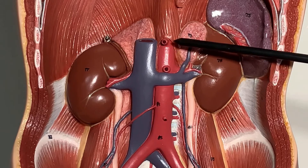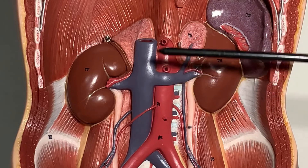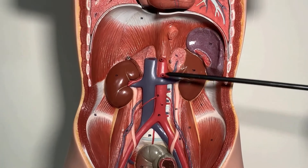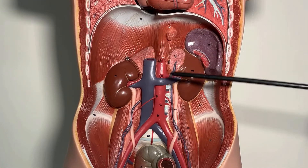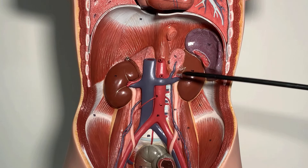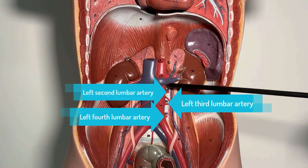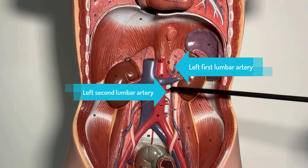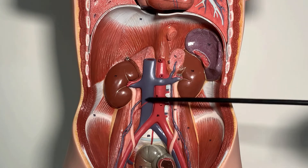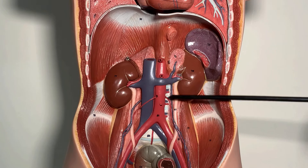Now we have covered the visceral branches. Moving on to the somatic branches — the word 'soma' refers to the body wall. We have five paired somatic branches. The majority are visible in this model, but a few are not. You can see here the second, third, and fourth lumbar arteries. The first lumbar artery cannot be shown in this model. On the right side, we would need to remove the inferior vena cava to see those vessels.